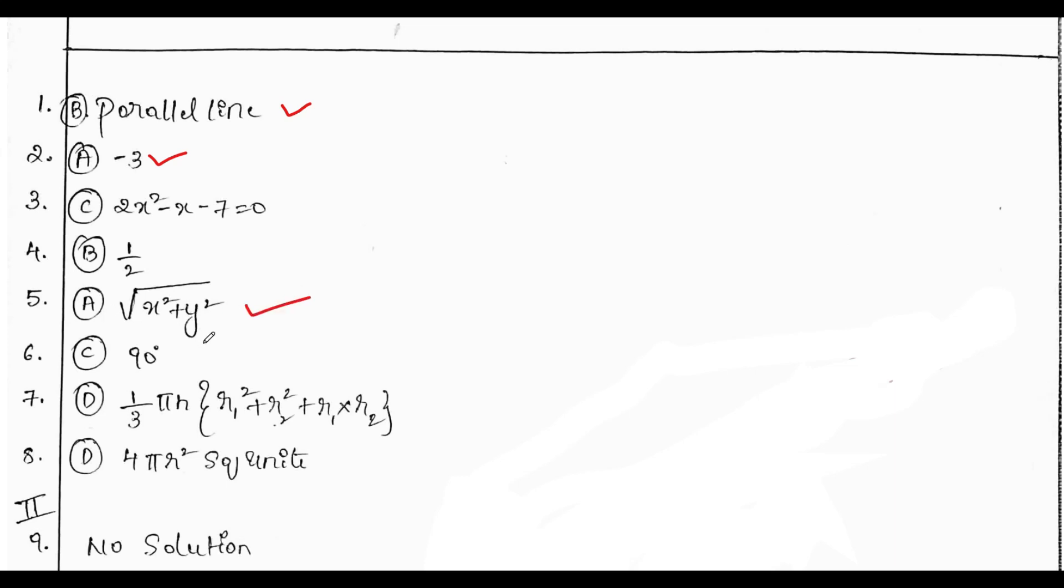Then the distance between the origin and the point is option A, square root of x squared plus y squared. Then angle between the tangent and the radius at the point of contact is 90 degree. Option C is correct answer.